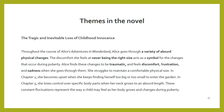The tragic and inevitable loss of childhood innocence is one of the themes in the novel. Throughout Alice's adventures, Alice goes through a variety of absurd physical changes. The discomfort she feels at never being the right size acts as a symbol for the changes that occur during puberty. She finds these changes traumatic, feeling discomfort, frustration and sadness. In Chapter 1, she becomes upset when she keeps finding herself too big or too small to enter the garden. In Chapter 5, she loses control of her body when her neck grows to an absurd length. These constant fluctuations represent how a child may feel as her body grows and changes during puberty.